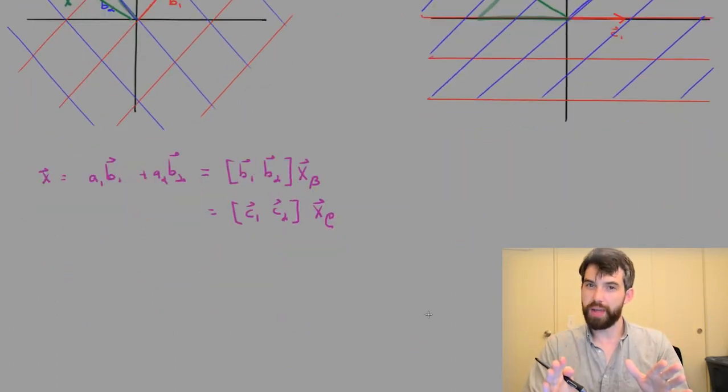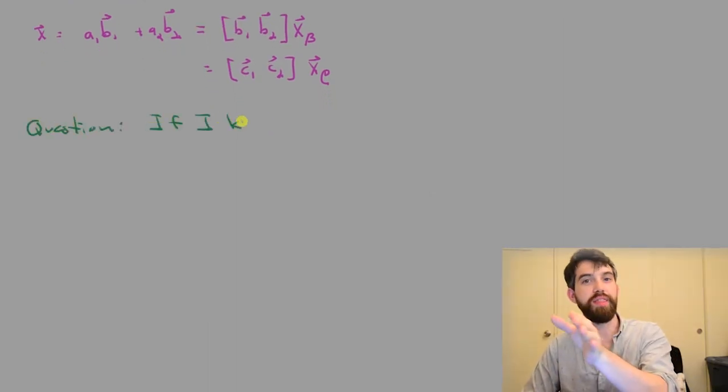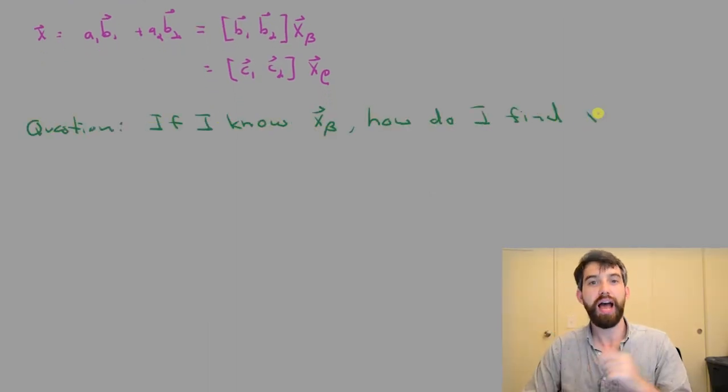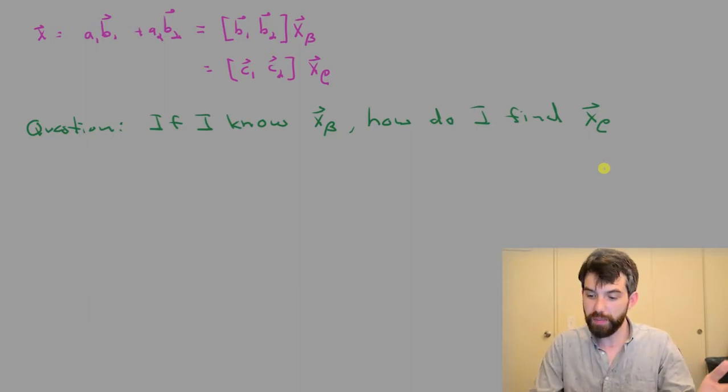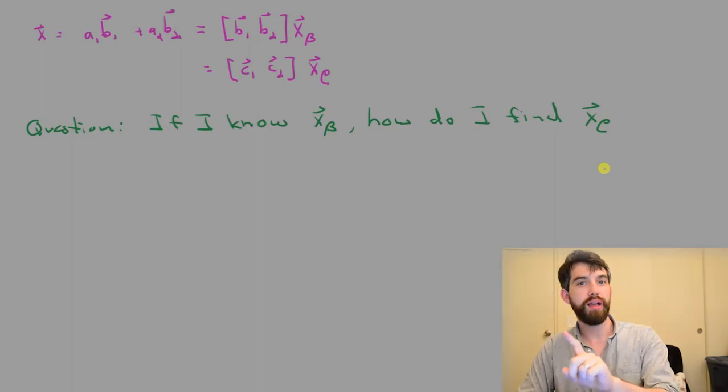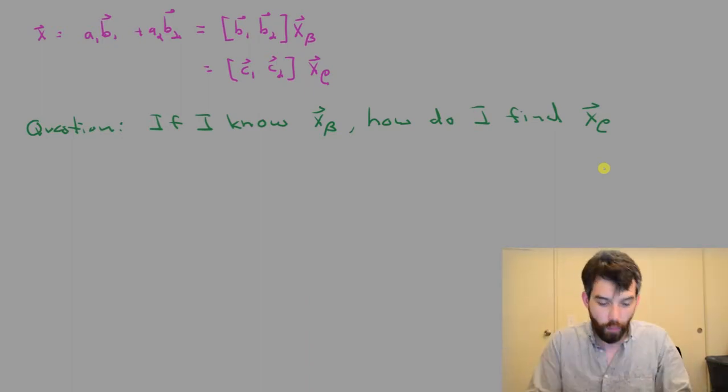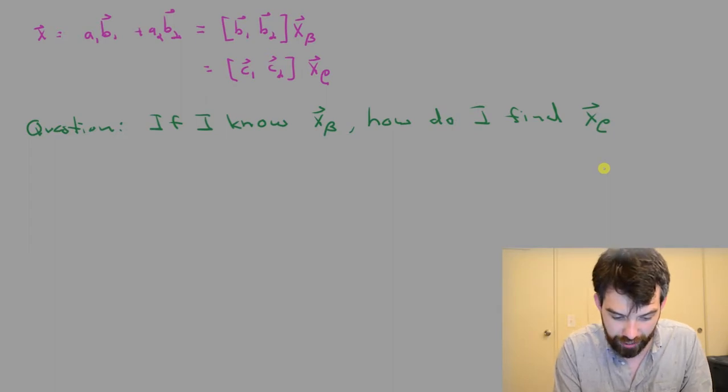So the real question that we have is if I know one of these, say, X written in the B basis, how do I figure out what X written in the C basis is going to be? Now, this is going to be a bit of a task, but what I'm going to first try to do is write the vectors B1 and B2 in the C basis. So one thing I could do is I could say, alright, let's do precisely what we just did above.